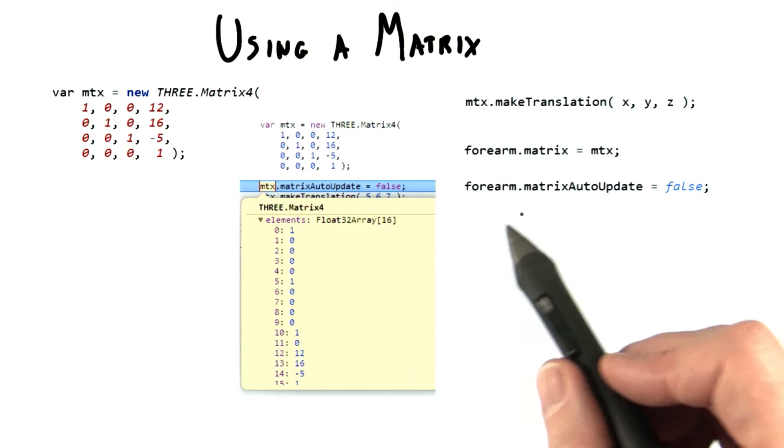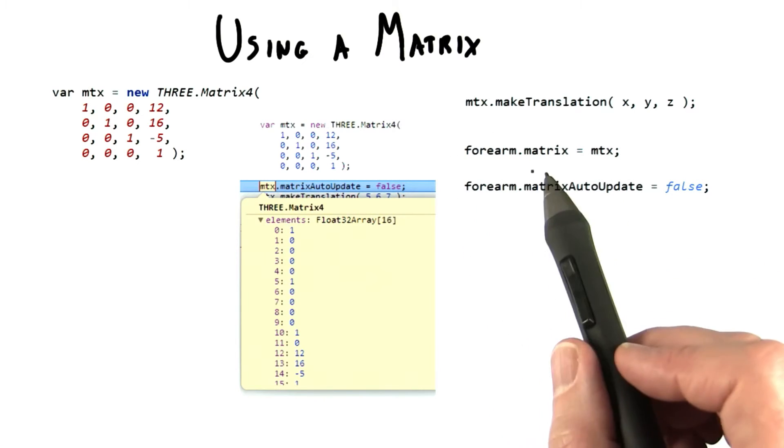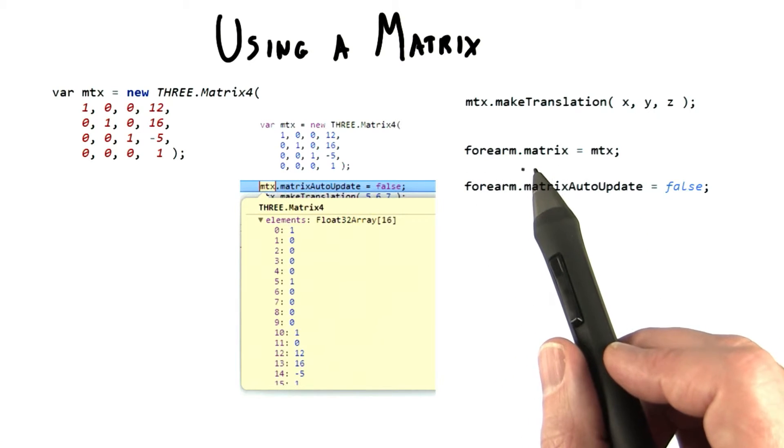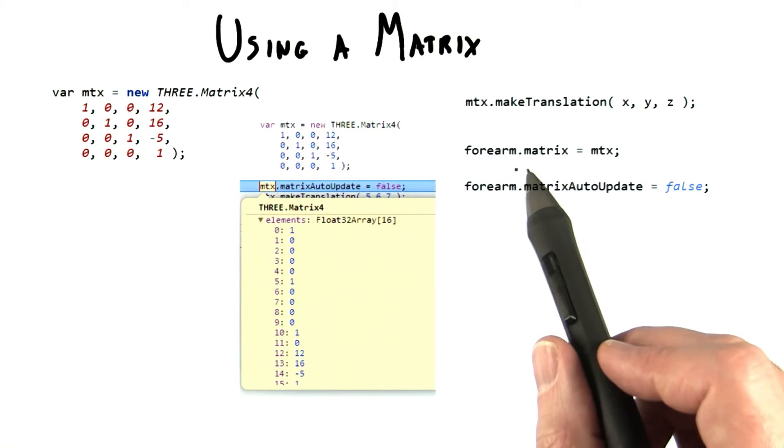So say we have our robot arm, an object 3D. To apply a matrix 4D to an object 3D, the most direct way of doing so is to set the local matrix on the object itself.